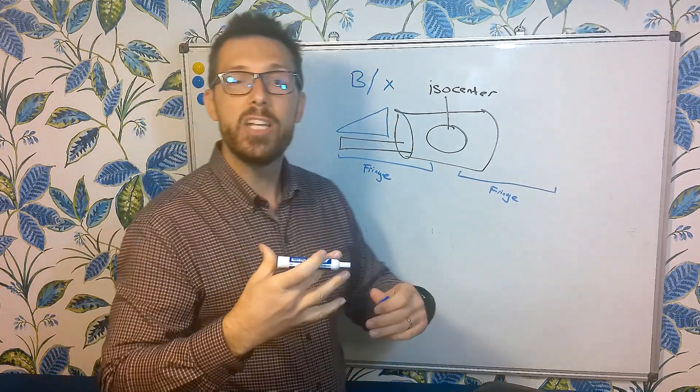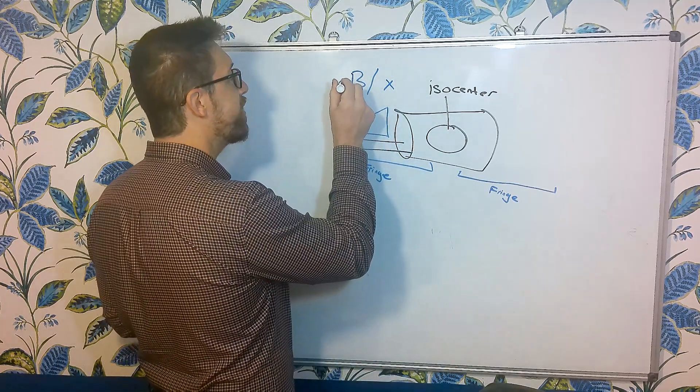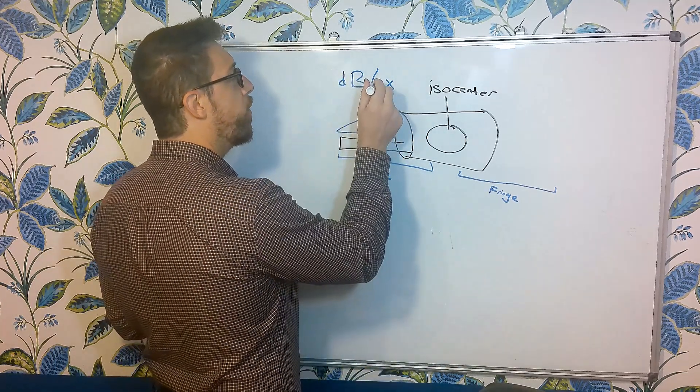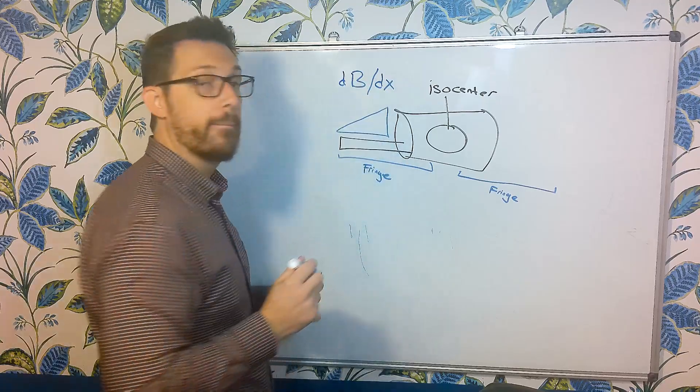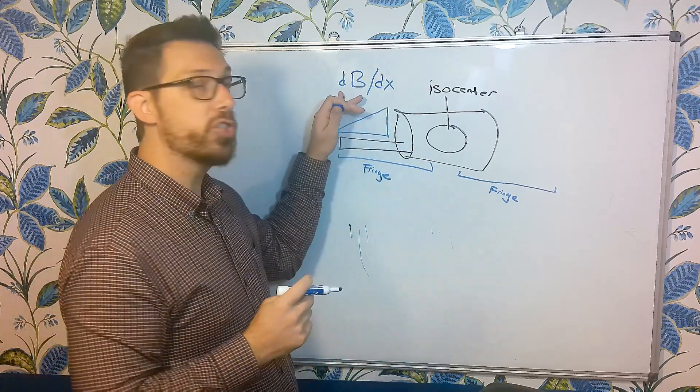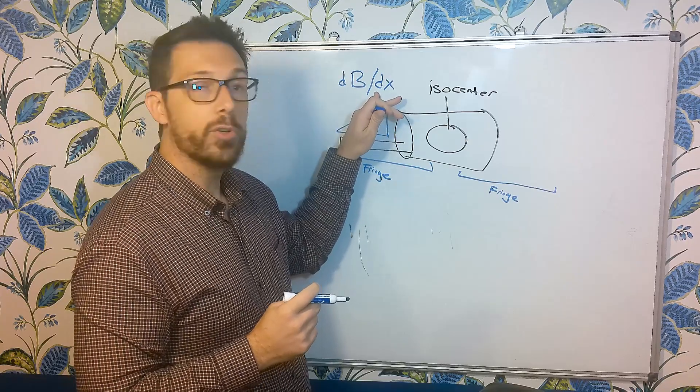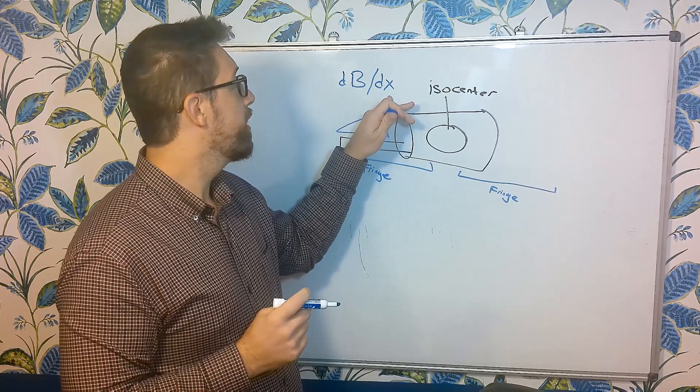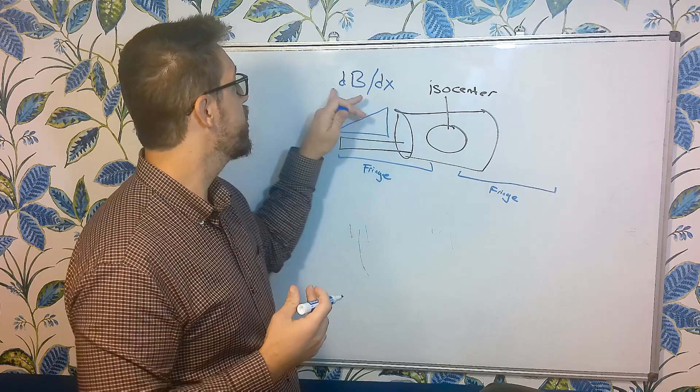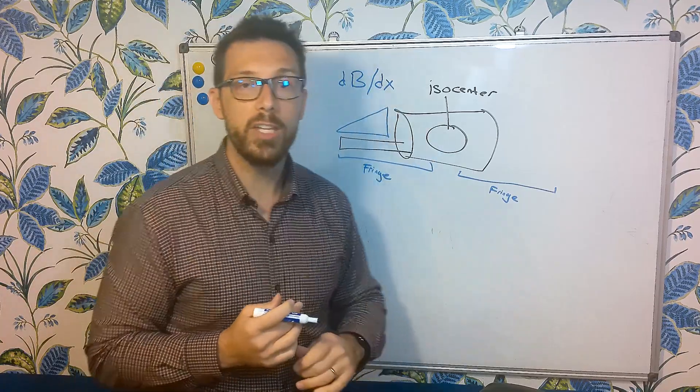we have to essentially say we have a changing magnetic field and D stands for changing over a change in distance. So D stands for change, B stands for magnetic field and D again stands for change and X stands for a distance or a location. So a change of magnetic field over a change in distance.